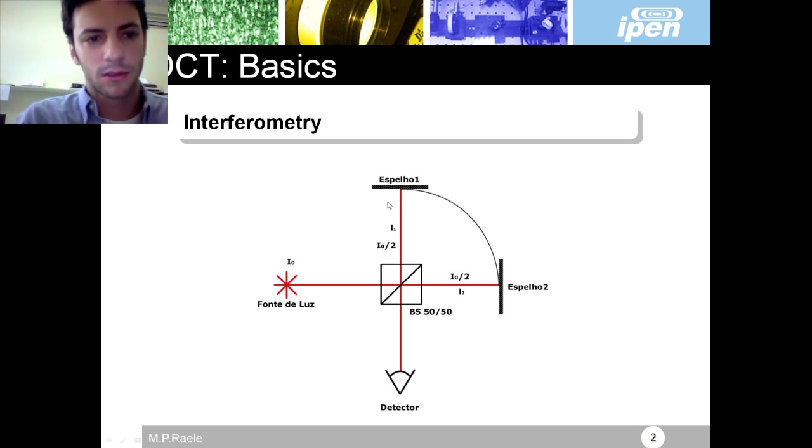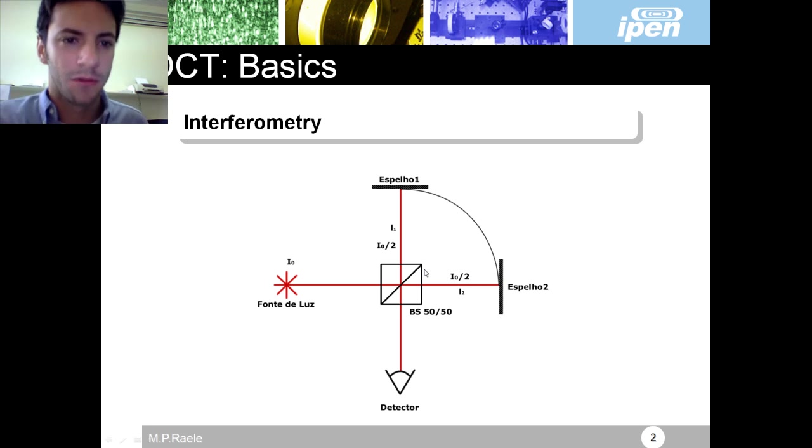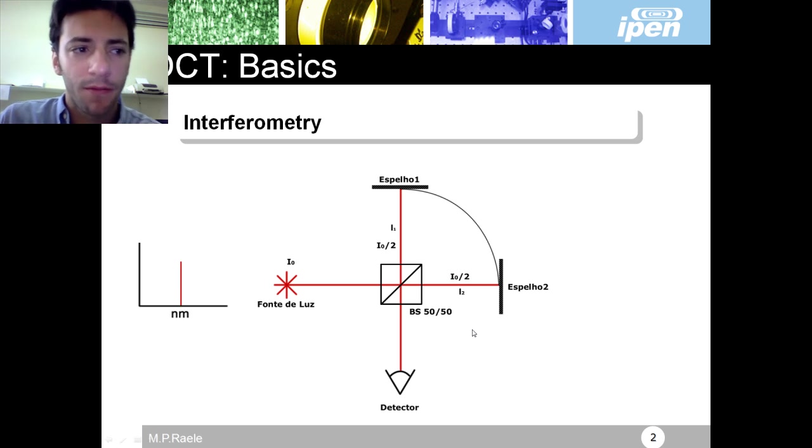So let's go to the presentation. Here I have my light source, my detector, my mirror that I will call the sample mirror. This one is my reference mirror and a beam splitter. If I have a monochromatic laser like this one, like a Helium-Neon laser...